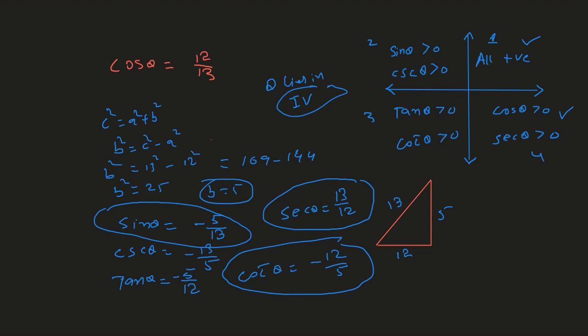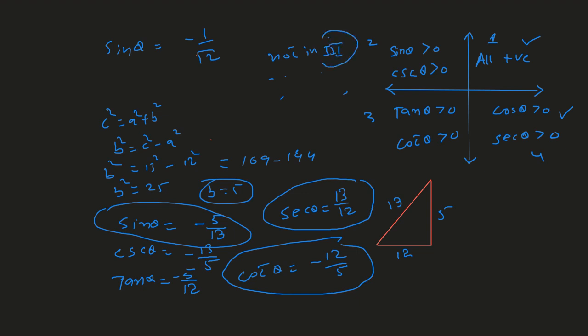Pause the video and try to figure out the next question. We have sine theta equals −1/√2, and the terminal arm of the angle is not in the third quadrant. Find all the other trig functions. Set up the triangle, figure out which quadrant the terminal arm is in, and then find all the trig functions. Hope it's helpful.